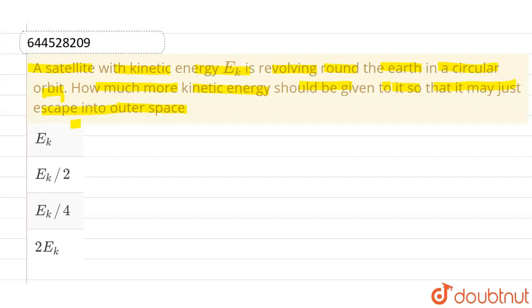Now we know that for escaping into the outer space, total mechanical energy of that particular satellite should be zero. Now presently the satellite is having energy EK, and let's say I am adding some E amount of energy in it so that the total energy gets equals to zero so that it escapes from the gravitational attraction of earth and escapes into the outer space.